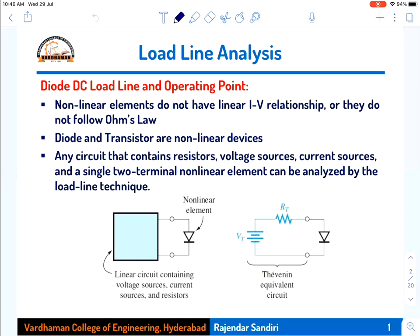From the IV characteristics, we understand that the diode is a non-linear device because the relationship between voltage and current is non-linear. It does not follow Ohm's law, where V equals IR represents a linear relationship. The diode's graph is an exponentially increasing function — not a straight line passing through the origin. Therefore, the diode is a non-linear element, and transistors are also non-linear devices.